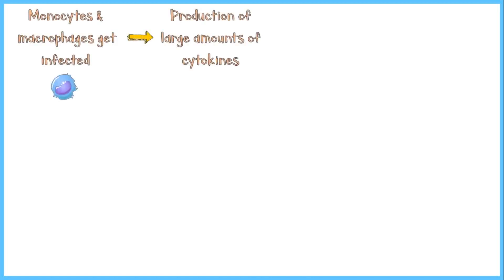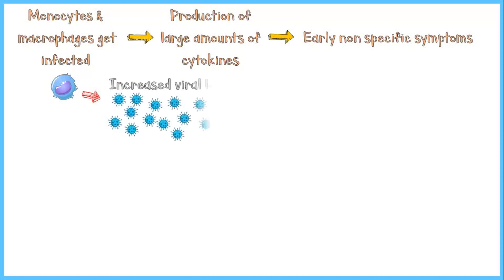When monocytes and macrophages become infected, they secrete large amounts of cytokines into the bloodstream, which mediate the early non-specific symptoms of the infection. They are also unable to halt viral replication, resulting in an increased viral load, while the host monocytes and macrophages undergo death by apoptosis.